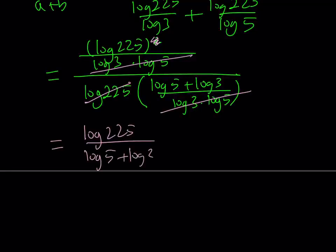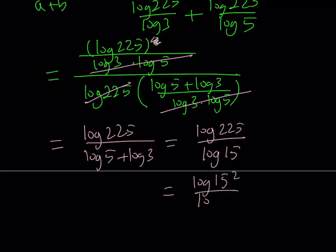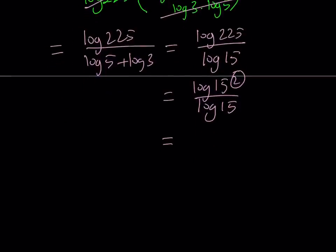From the properties of logarithms, this can be written as log 3 times 5, which is log 15. And 225 happens to be 15 squared, so I can write this as log 15 squared divided by log 15. The 2 can be moved to the front: 2 log 15 over log 15. You can cross them out, and the answer comes out as 2.